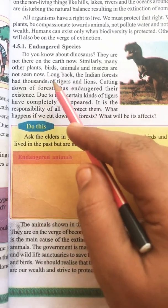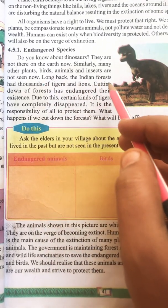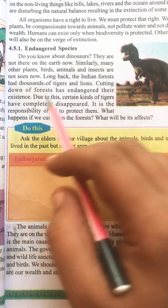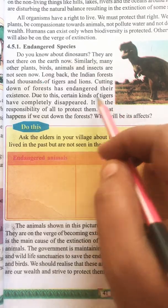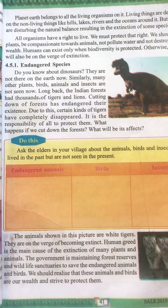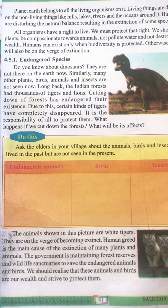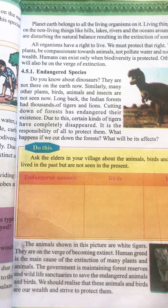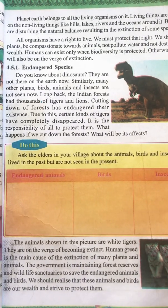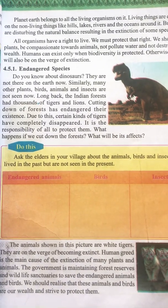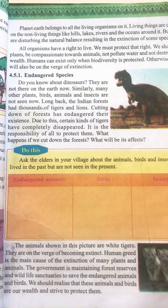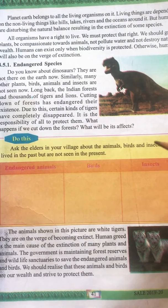Long back, the Indian forest had thousands of tigers and lions. Cutting down of the forest has endangered their existence. We had thousands of tigers and lions, but now their numbers are very low because of the loss of their forest habitat.